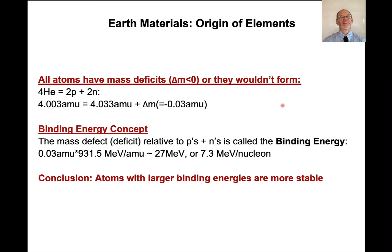So let's go back and let's not worry about how one atom relates to another in terms of mass deficit. Let's just think about a single isotope. So if we look at a single isotope, it has to have a mass deficit with respect to protons or neutrons, or it wouldn't form. Okay, so here's an example of this. Here's helium-4. Helium-4 has two protons and two neutrons.